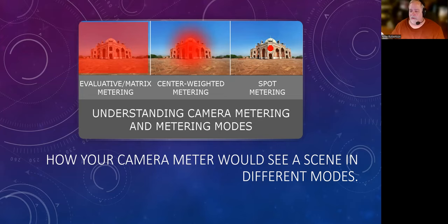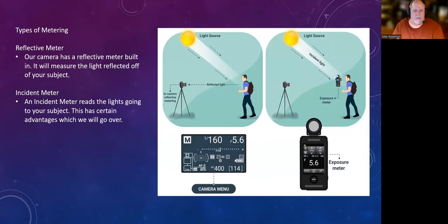Center weighted, it puts a lot of weight towards the center. Spot metering, pretty much dead center. Actually, I do use spot metering some when I'm doing portraits and stuff. And we'll talk about that a little bit later, but what kind of meter does our camera actually have? So our camera has what's called a reflective meter in it.